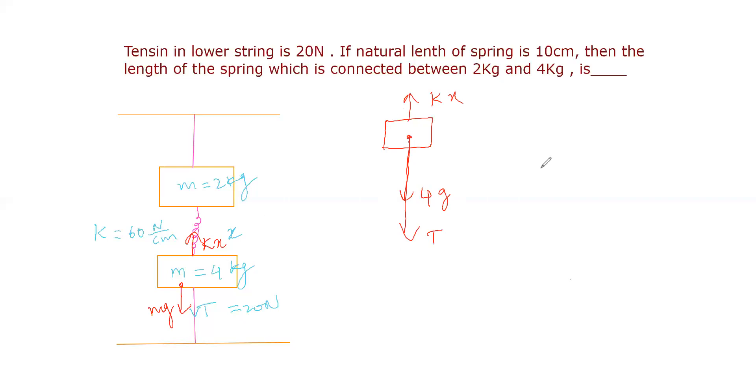For equilibrium of this block, kx equals mg plus tension. Here m is 4 kilogram, g is 10, and tension is 20. So this gives us 40 plus 20 equals 60 newton.